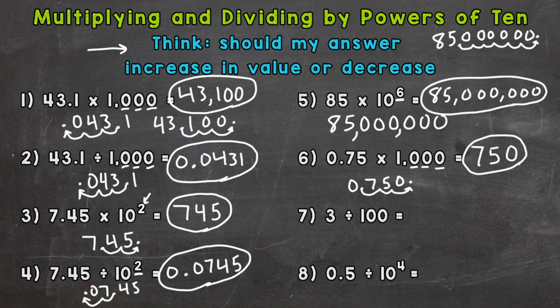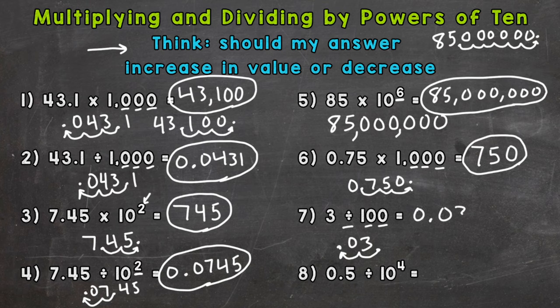Number 7, three divided by 100. We have a whole number divided by a power of 10. Two zeros means we move the decimal twice. It's division, so we decrease in value and move the decimal to the left twice. A decimal comes right after a whole number, so I place the decimal and move it twice: 1, 2 — fill with the zero, and we end up with an answer of 3 hundredths.